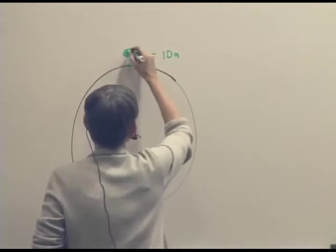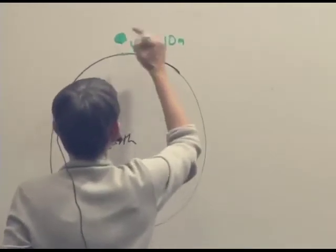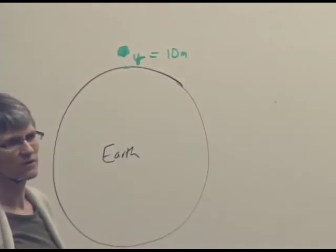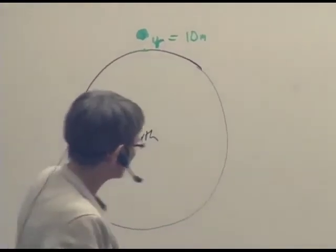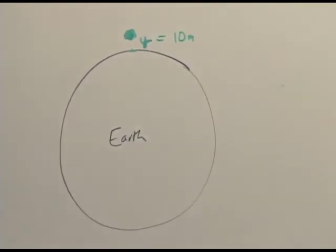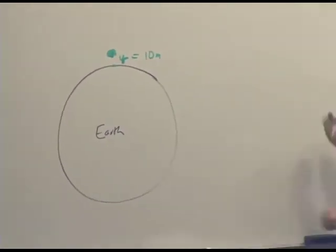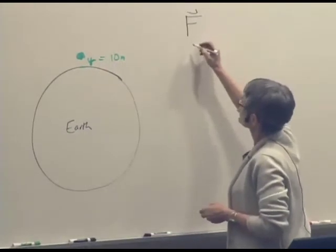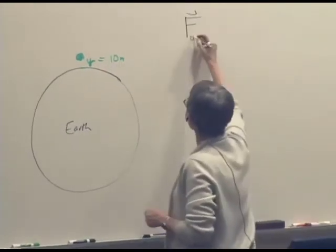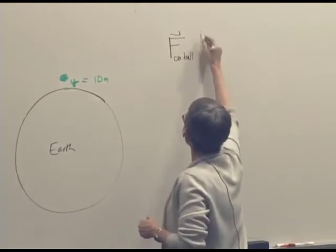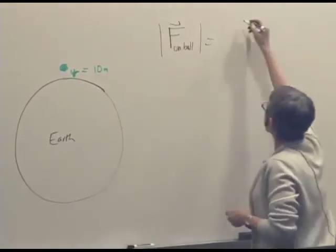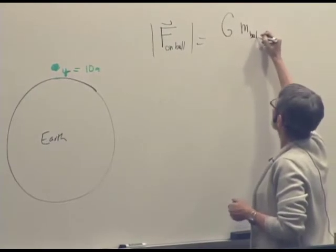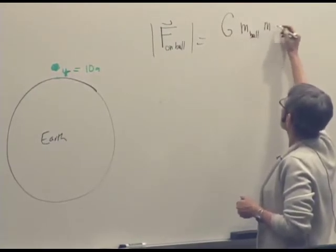So here's a 10 kilogram object that's 10 meters above the Earth's surface. So actually using this equation, we could calculate the gravitational force. The magnitude of the force on the ball would be equal to the gravitational constant times the mass of the ball times the mass of the Earth.